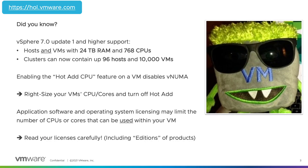Over the years, the VMware vSphere platform has increased its capability to run monster VMs by continually pushing the envelope regarding resources which can be assigned to individual virtual machines. Did you know that our latest release can support virtual machines with 24 terabytes of RAM and 768 CPUs? From a management scalability and performance perspective, we are now able to support 96 hosts and 10,000 virtual machines in a vSphere cluster.